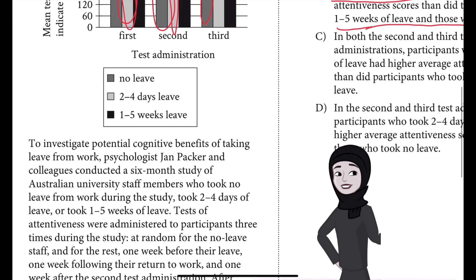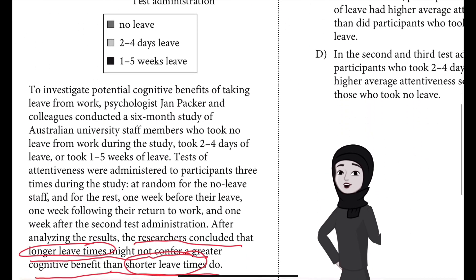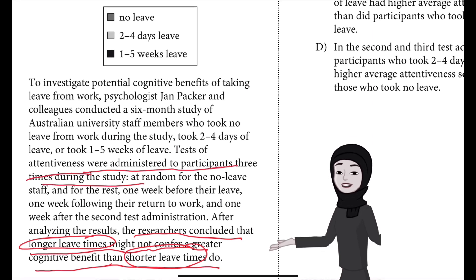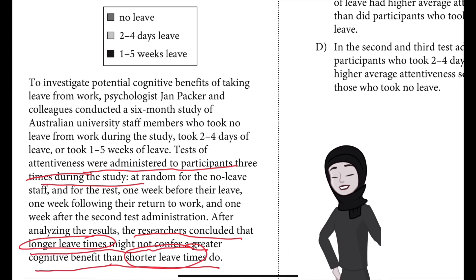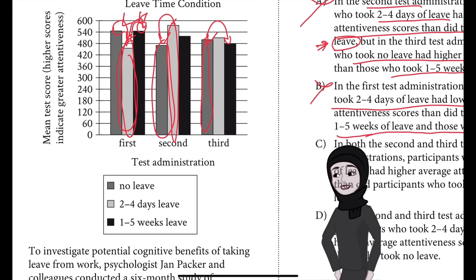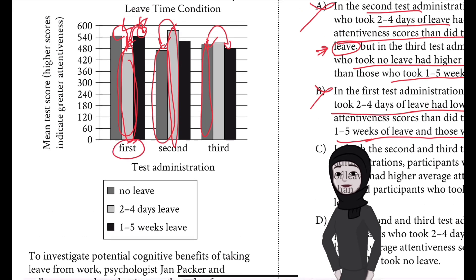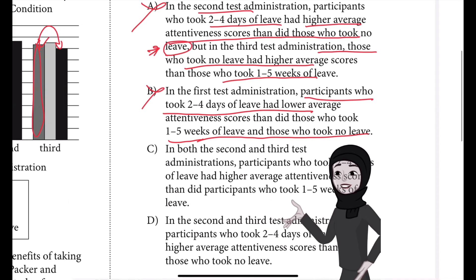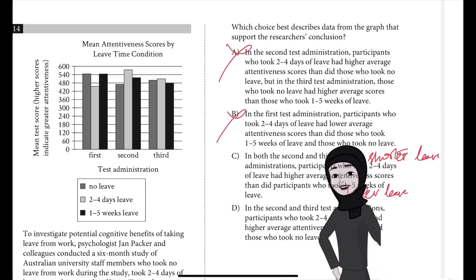The tests of attentiveness were administered three times during the study — at random for the no-leave staff, and for the rest, one week before they leave. So the first test was taken before they had even gone on leave. Since they have not gone on leave yet, we cannot draw any conclusions from that data. So choice B is not correct.